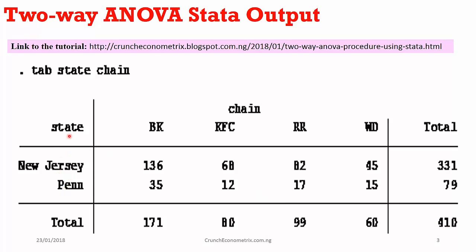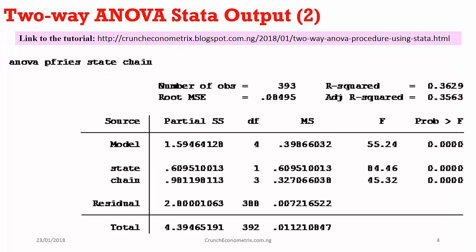The Stata syntax to generate the distribution table is simply 'tab' followed by the two explanatory variables. The syntax for two-way ANOVA is 'anova' followed by your dependent variable and the two factor variables — in my case: 'anova pfry state chain'. The output has many features, so let me begin explaining them.